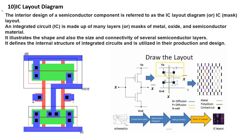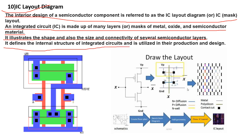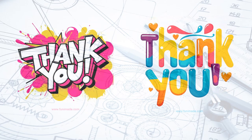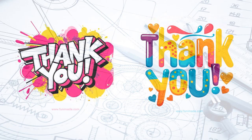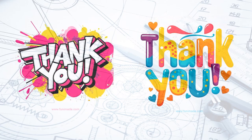The last one is the IC layout diagram. The interior design of a semiconductor component is referred to as the IC layout diagram. In an integrated circuit, the IC is made up of many layers and masks of metal, oxide, and semiconductor materials. It illustrates the shape, size, and connectivity of several semiconductor layers. It defines the internal structure of integrated circuits and is utilized in their production and design. Here we have shown a type of IC layout diagram.